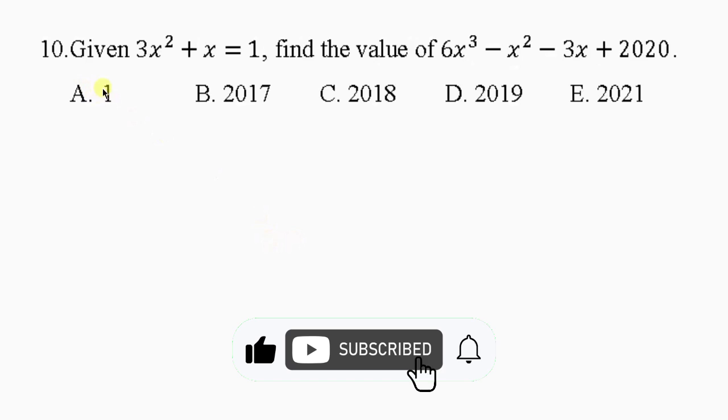The question says, given 3x squared plus x equal to 1, find the value of 6x to the power 3 minus x to the power 2 minus 3x plus 2020.